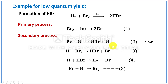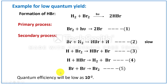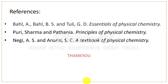Step 2 in the secondary process is very slow, and the remaining steps 3, 4, and 5, which depend on step 2, will also become very slow. Also, the product formed will be decomposed in a subsequent step, and bromine atoms recombine to form bromine molecule. Thus, the number of hydrogen bromide molecules formed will be very less, and the quantum efficiency for this reaction is very low — that is, 10 to the power of minus 2. Thus, formation of hydrogen chloride has high quantum efficiency, whereas formation of hydrogen bromide has very low quantum efficiency. With this, I will conclude this session. Thank you.